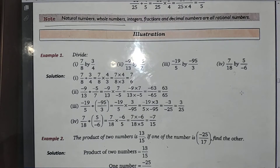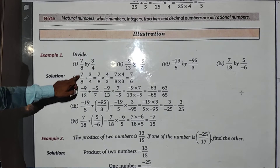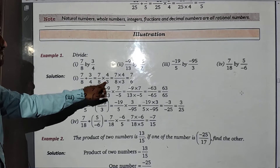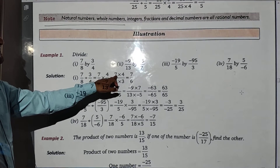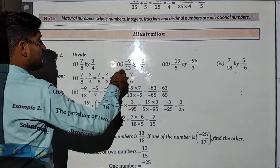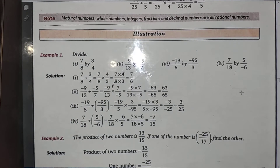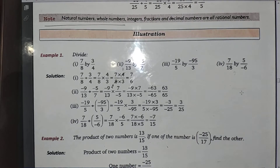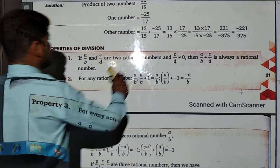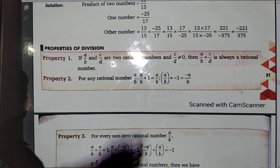Next problem: divide 7/8 by 3/4. So 7/8 divided by 3/4 equals 7/8 multiplied by the reciprocal of 3/4, which is 4/3. Simplifying 7×4 over 8×3: 4 and 8 cancel to give 1 and 2, so the answer is 7/6.